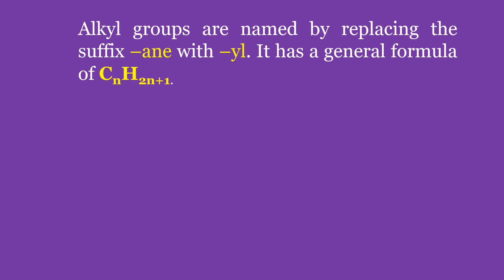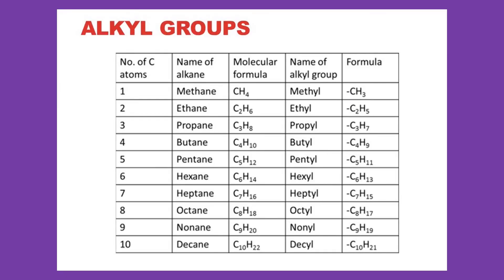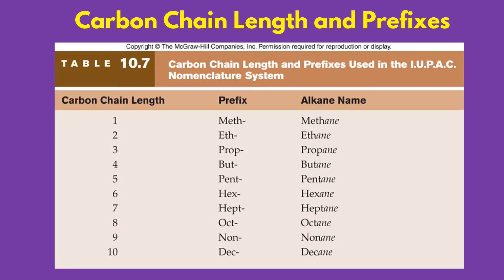Alkyl groups are named by replacing the suffix -ane with -yl, and have a general formula of CnH(2n+1). For example, a sidechain with one carbon is named methyl, while one with two carbons is ethyl. The sidechain in our previous example is a methyl since it has only one carbon. These are the alkyl groups including their names and molecular formulas — we simply subtract one hydrogen from the formula of the alkane to form the alkyl. These are the prefixes used to indicate the length of the carbon chain based on the IUPAC nomenclature system: meth-, eth-, prop-, but-, pent-, hex-, hept-, oct-, non-, and dec-.